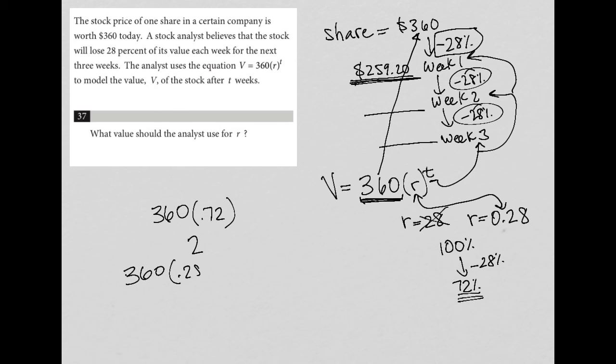360 times 0.28, let's just do that math, is equal to $100.80. So that's definitely not what I'm left with when it goes down by 28%. That's how much it goes down, and that's where a lot of students are going to make a mistake on this question.